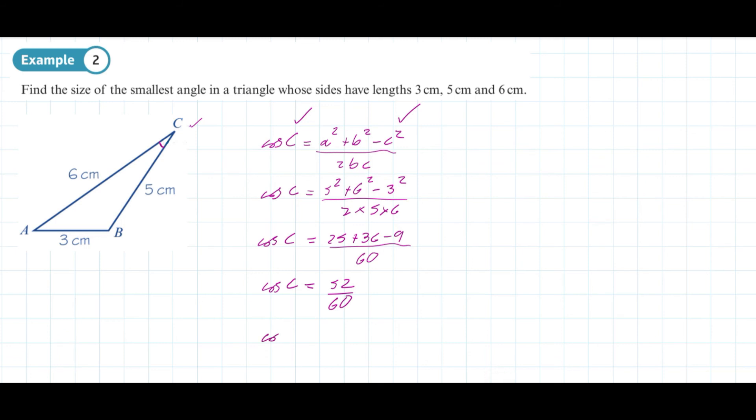Then we can do cosine⁻¹ of 52 over 60, which gives us angle C: 29.9 degrees to three significant figures.